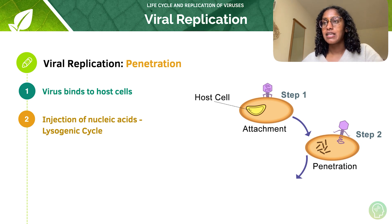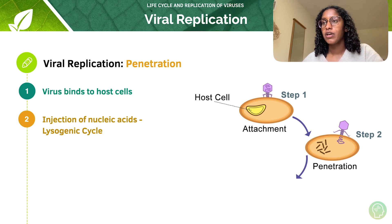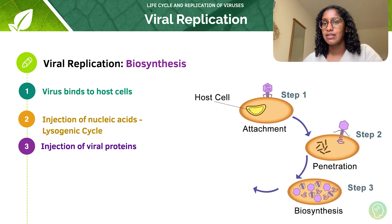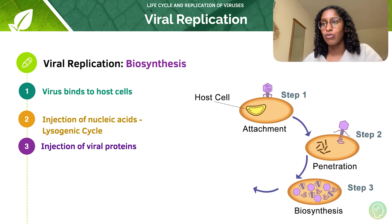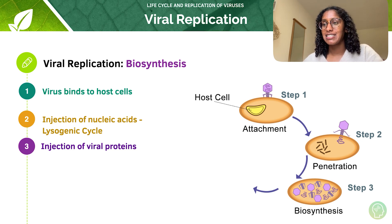When viruses infect a host cell, they inject their nucleic acids into the host cell. Once the attachment proteins of the virus attach to the host cell, the virus latches onto the cell and injects it with its nucleic acids. Certain viruses can also inject unique viral proteins into the host cell, and these proteins help hijack the host cells to replicate the viral genomes and to make new viral proteins. Viruses can also force the cell to give up using energy to make proteins and replicate DNA for the cell.